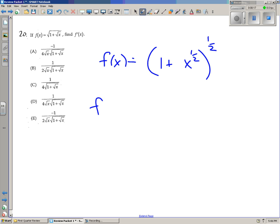So chain rule, unraveling, we have the outer function which is stuff to the 1 half. The derivative of stuff to the 1 half is 1 half times the stuff, negative 1 half, times the derivative of the stuff. So the stuff is 1 plus x to the 1 half and multiply by the derivative of the stuff, which is 1 half x to the negative 1 half.